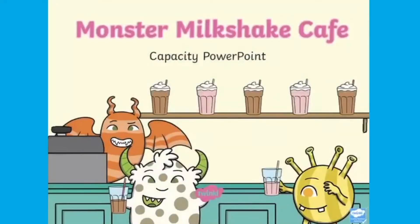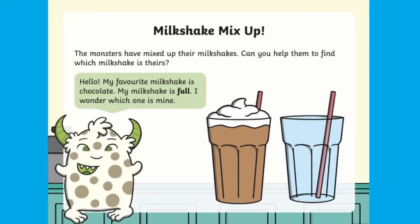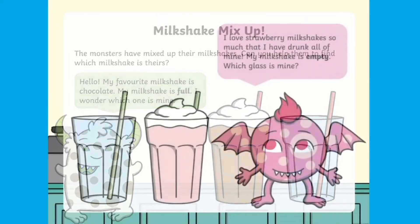Join Twinkle Teacher Maxine as she guides Early Years children through the topic of capacity. Maxine begins by using this delightful Monster Milkshake Cafe PowerPoint, which is sure to engage young children in the topic. Can children figure out which milkshake the monster is looking for using their knowledge of capacity? This helps to build children's vocabulary using words such as full, empty, and half full.